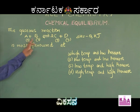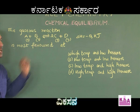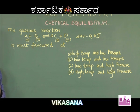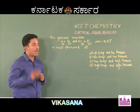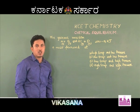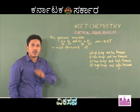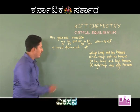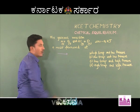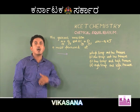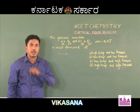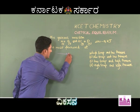For example, A plus B giving 2C plus D, delta H is equal to minus Q kilojoules. This clearly indicates that the reaction is exothermic in nature. If the reaction is exothermic in nature, then the forward reaction will be accompanied by release of heat, and the temperature of the system increases.